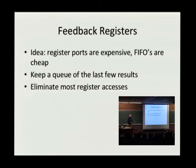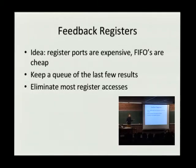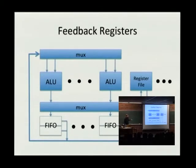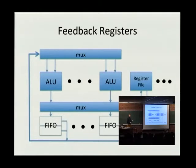The idea was: these register ports are expensive, but we can have a FIFO queue in the hardware and that's really cheap. And we can have a MUX as well to select from different elements of this FIFO queue, and that's really cheap as well. So what we're going to do is keep a queue of the last few results of each ALU operation that's been done, and then feed back those results into the next cycle so that we can cut out most of the register accesses that we would normally perform. That turns out to be really, really efficient. You have a bunch of ALUs as well as a normal register file, but note that you can only read and write one register per cycle — most of this stuff is going through the FIFO queue.